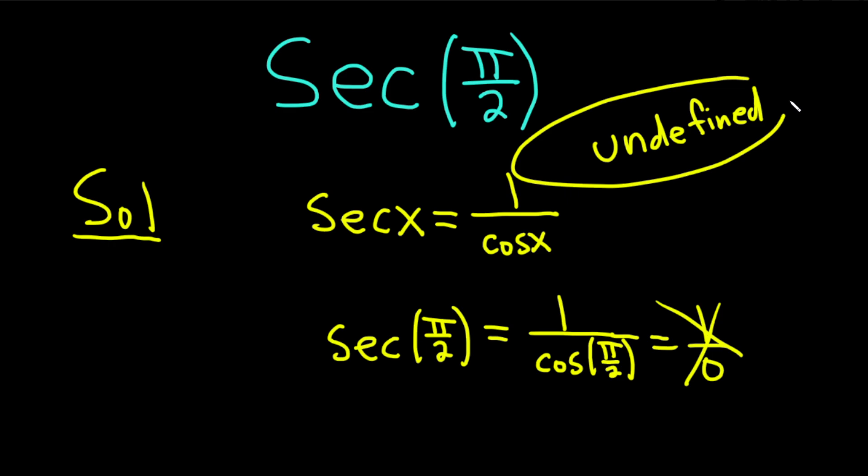Because you can't really compute the value of the secant of π/2. It is not defined—there is no value. So we say it is undefined.